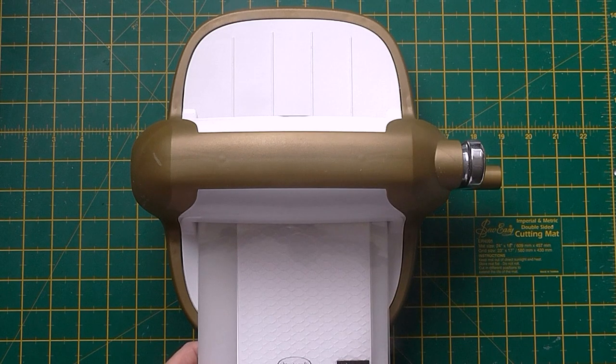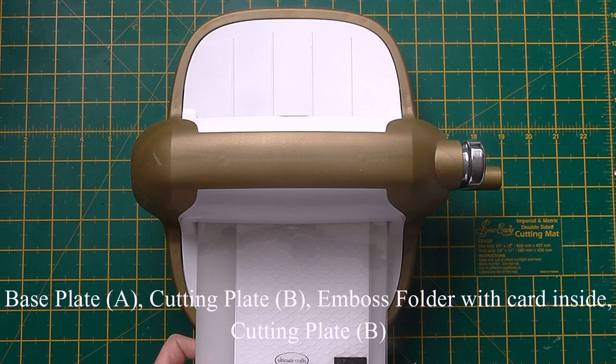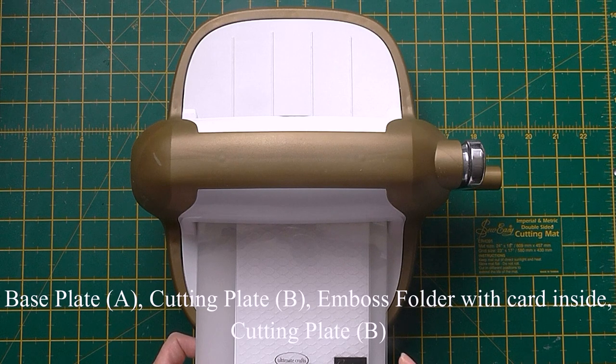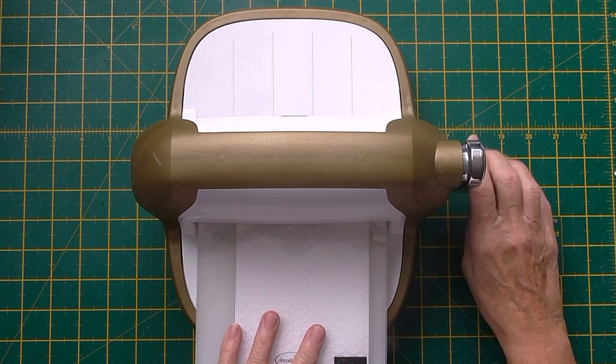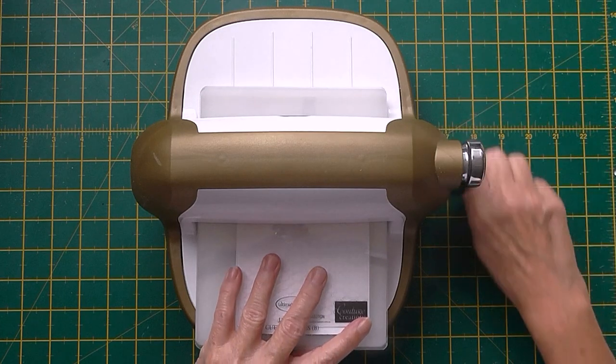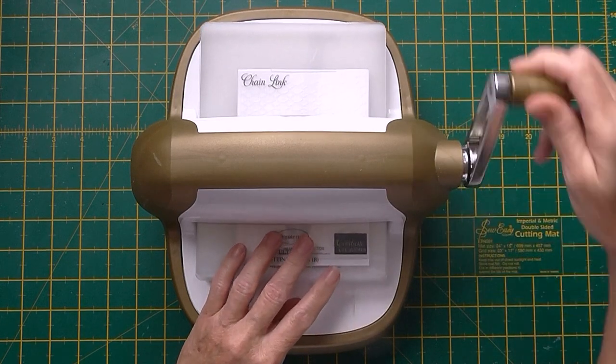So just to recap I have got the A base plate, I have a B plate, I have my folder with the card inside and I finally have a B plate. Once I have that sandwich together all I need to do is to roll this through my machine.